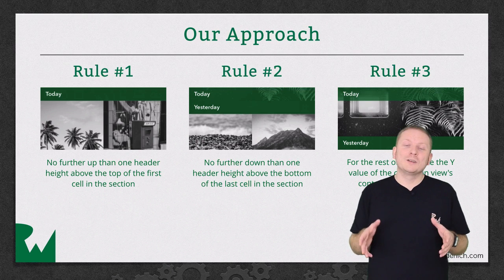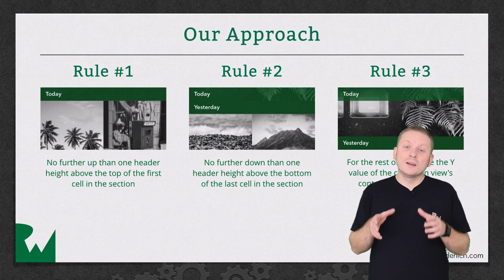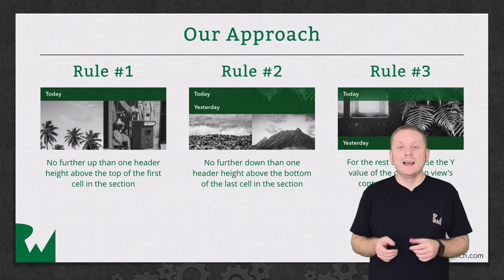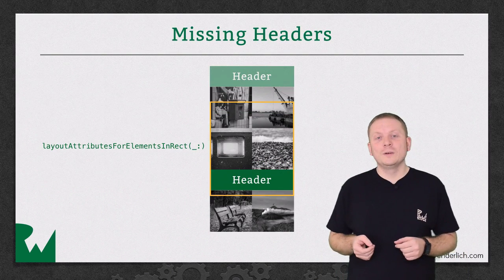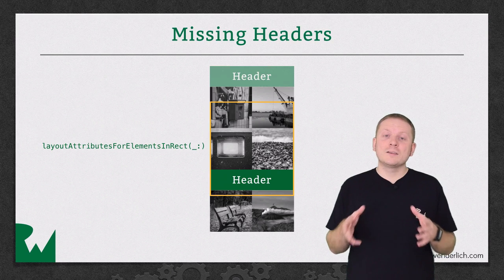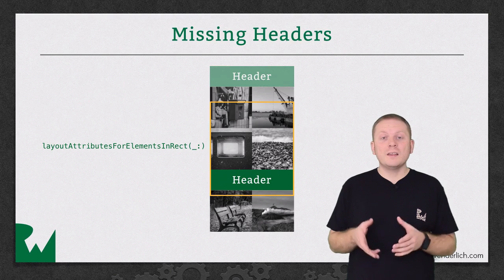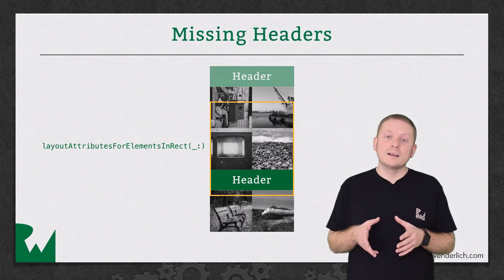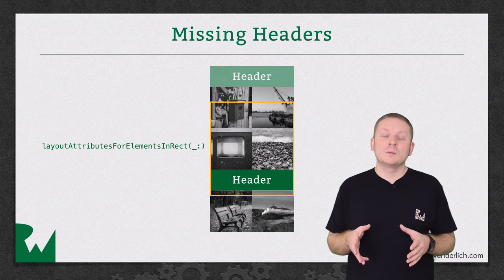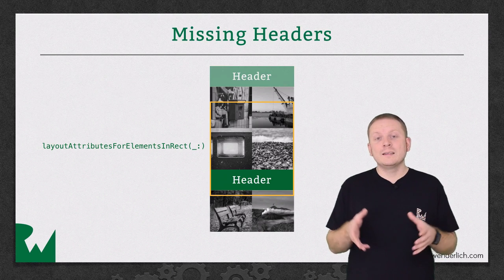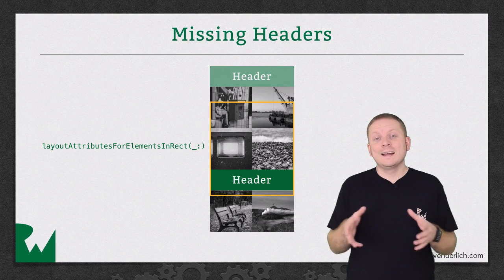Now, implementing these three rules is pretty straightforward, as you'll see in the demo later. But there is one more thing that we need to take care of, and that's missing headers. As we're using UICollectionViewFlowLayout, we can simply call super in layoutAttributesForElementsInRect to obtain the necessary layout attributes, rather than having to create them ourselves. However, there is one downside to this approach. The call won't return any layout attributes for any headers whose frame doesn't intersect with the given Rect, even if the frame of the sum of the cells in that section do.